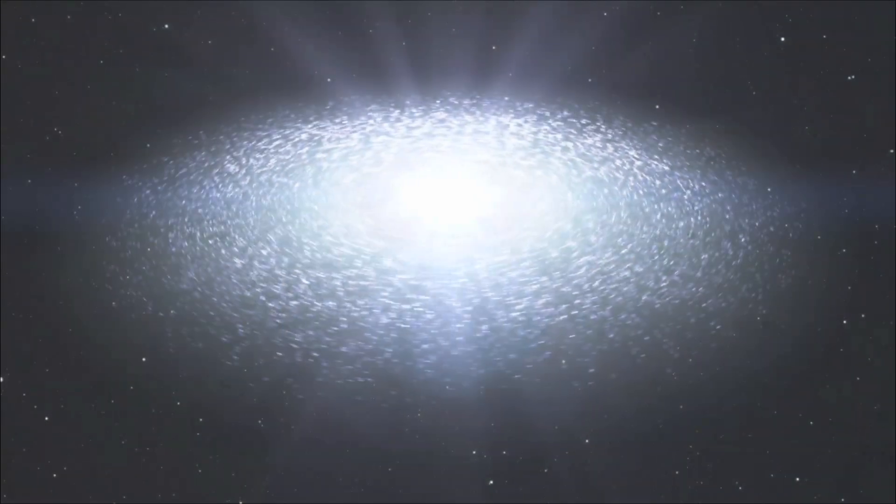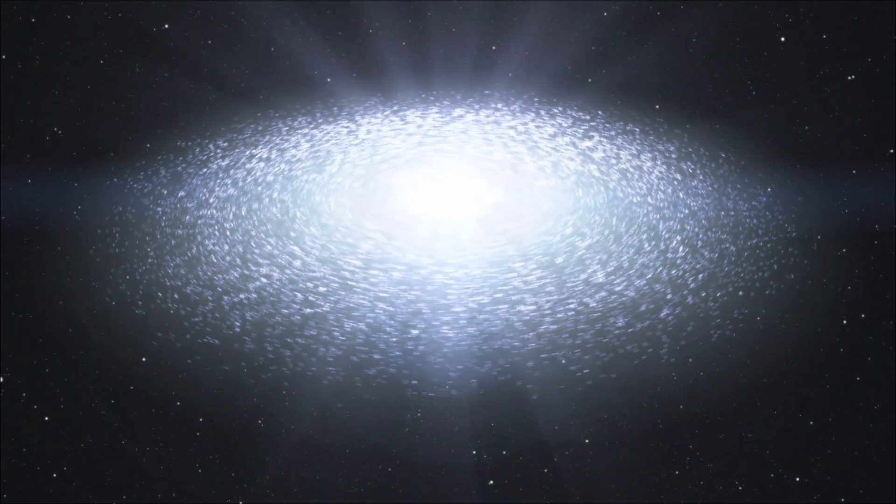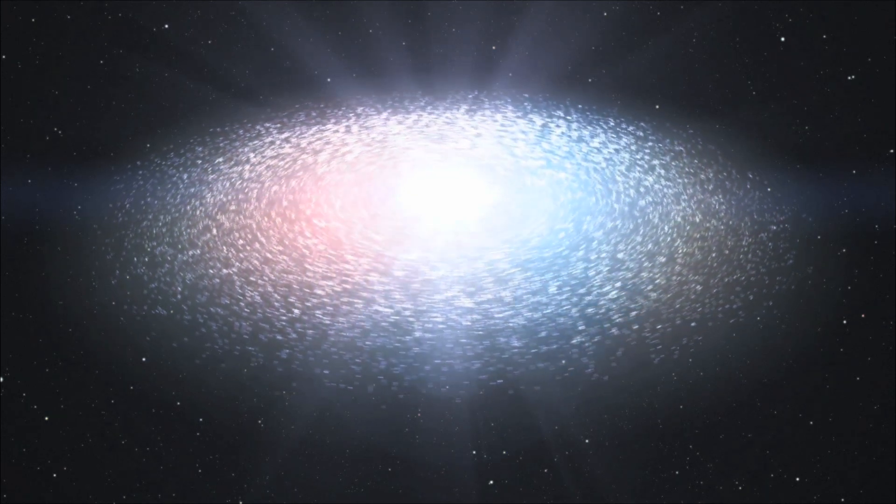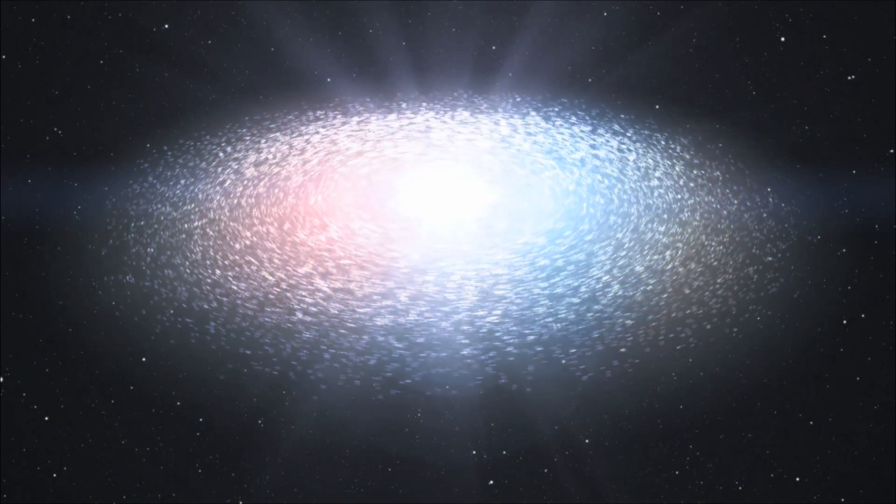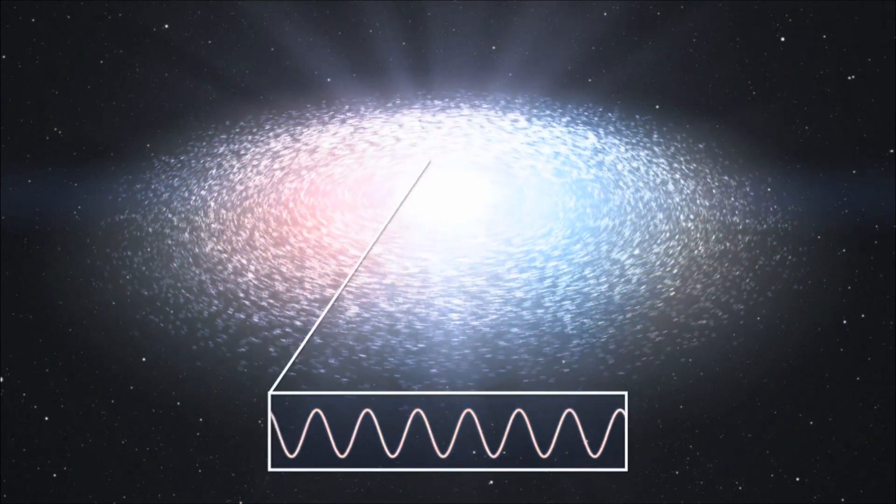When Hubble observed the disk at the center of a nearby galaxy, Messier 87, the astronomers saw that its color was not quite the same on both sides. One side was shifted towards blue and the other towards red. And this told the scientists that it must have been rotating very quickly.